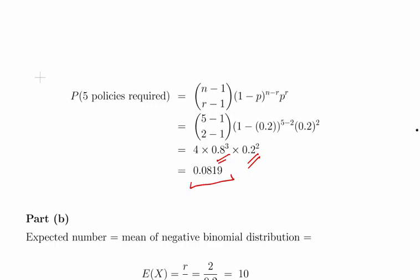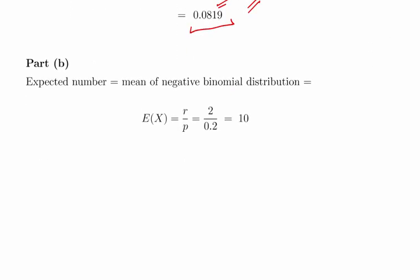Part (b): The expected number is the mean of the negative binomial distribution for Type 2. That's R divided by P, which is 2 divided by 0.2, which gives us 10. Essentially, if we're looking for two successes, we should expect to be looking through 10 policies.